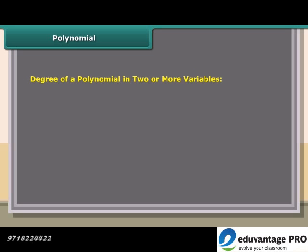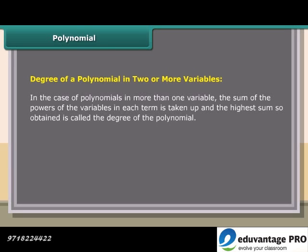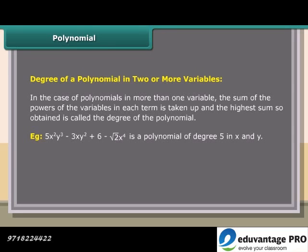Degree of a polynomial in two or more variables: in the case of polynomials in more than one variable, the sum of the powers of the variables in each term is taken, and the highest sum obtained is called the degree of the polynomial. Example: 5x²y³ minus 3xy² plus 6 minus √2 · x⁴ is a polynomial of degree 5 in x and y.